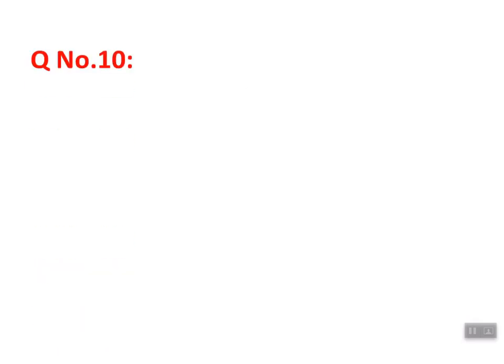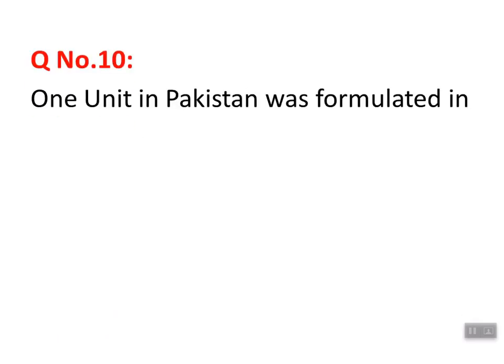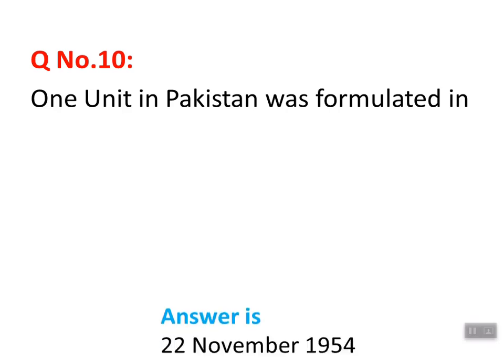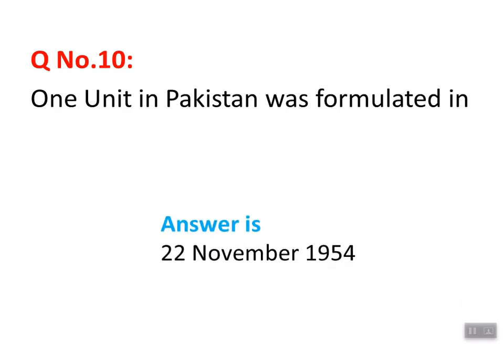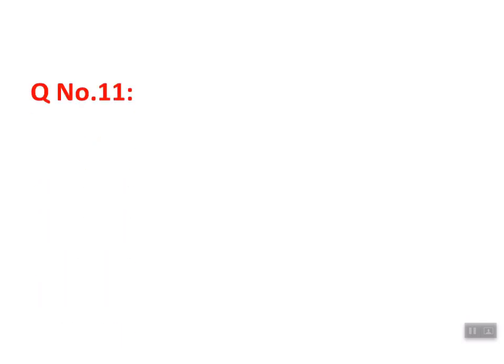Question number ten: 'One Unit in Pakistan was formulated in...' The One Unit scheme was announced by the government, under which all provinces including Bengal were to be merged. This scheme was announced on 22 November 1954. Later, Prime Minister Sikandar Mirza in 1955 took action on it and completed its implementation.